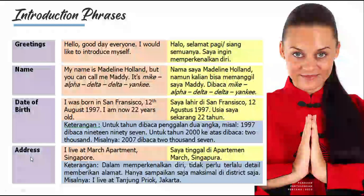Address. Dalam memperkenalkan diri, kamu tidak perlu terlalu detail memberikan alamat. Kenapa? Karena people will not remember. Jadi kamu hanya memberikan sampai maksimal di district saja. Misalnya: 'I live at March Apartments, Singapore.' Atau 'I live at Tanjong Priuk, Jakarta.' 'I live at Kebantenan, Jakarta.' 'I live at Cilincing, North Jakarta.' Kamu tidak perlu menyebutkan nama jalan secara lengkap karena itu terlalu detail. Kamu hanya memberikan detail alamat dalam form tertulis atau ketika diminta.